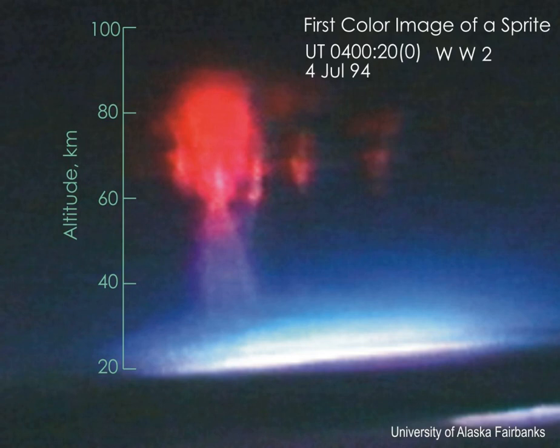Sprites may be horizontally displaced by up to 50 kilometers (31 miles) from the location of the underlying lightning strike, with a time delay following the lightning that is typically a few milliseconds, but on rare occasions may be up to 100 milliseconds. In order to film sprites from Earth, special conditions must be present: 150 to 500 kilometers of clear view to a powerful thunderstorm with positive lightning between cloud and ground, red-sensitive recording equipment, and a black unlit sky.